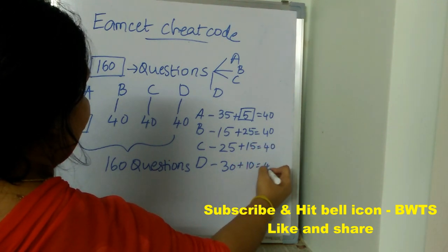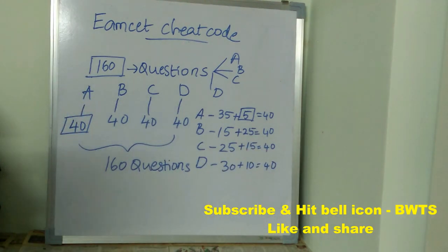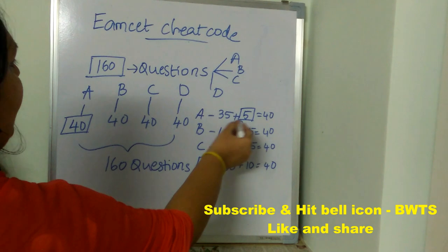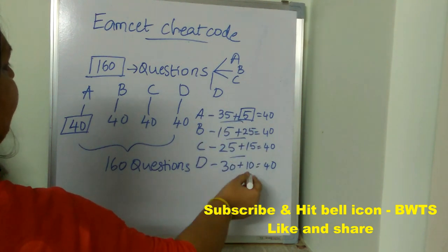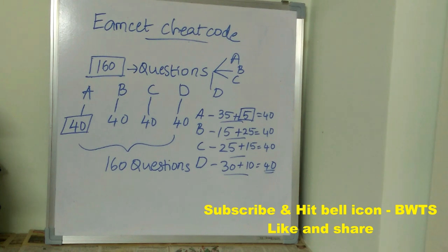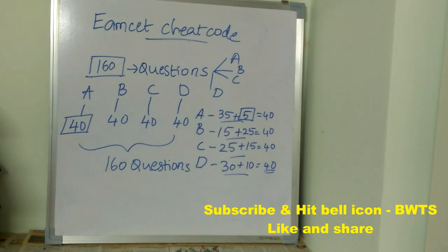And 10 more times you can put Option D as answer. So like this, you need to calculate how many times you kept each option as an answer, and once you add your options, you should get a total value of 40 for each. A sincere suggestion: use this cheat code only when you are unable to cross the minimum cutoff and unable to answer most of the questions.